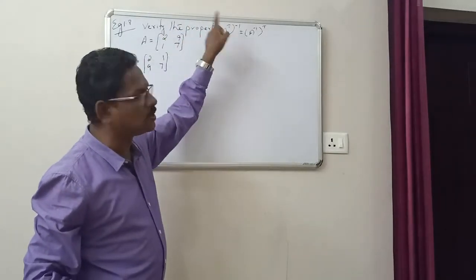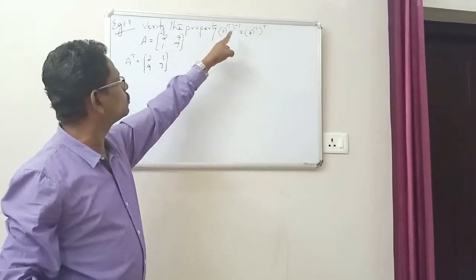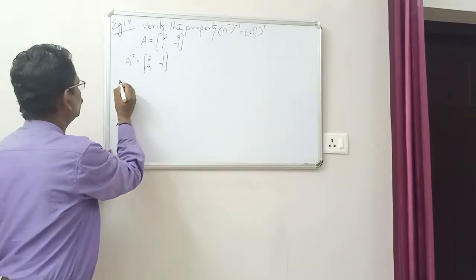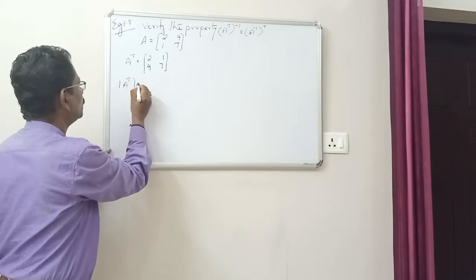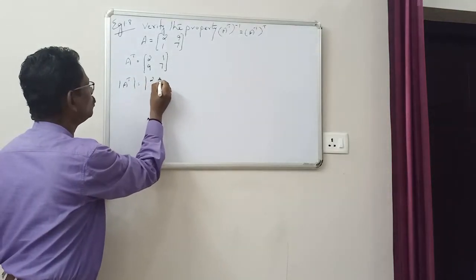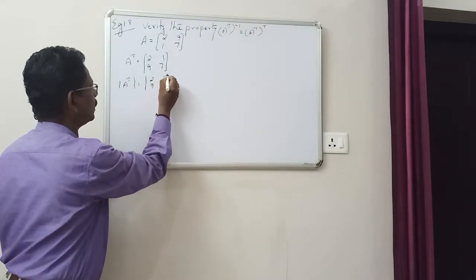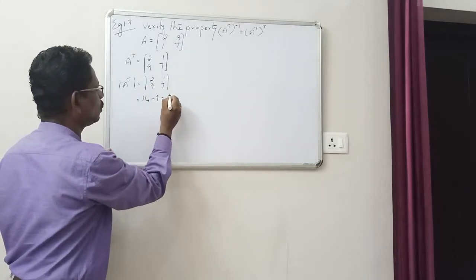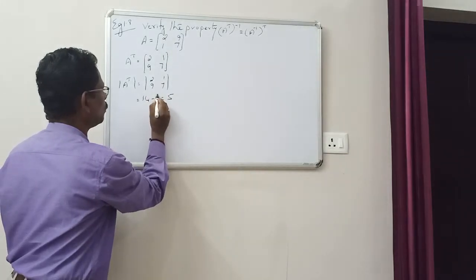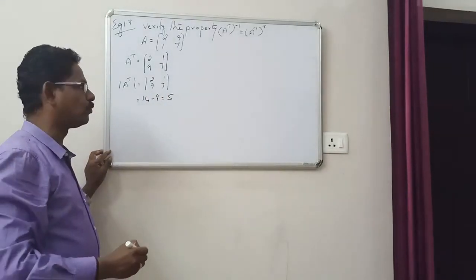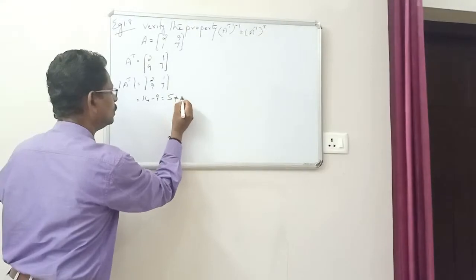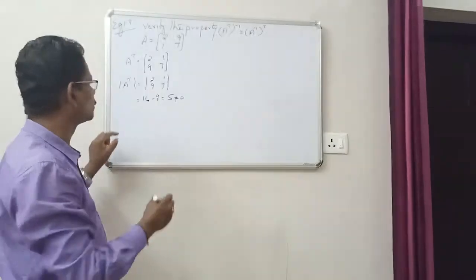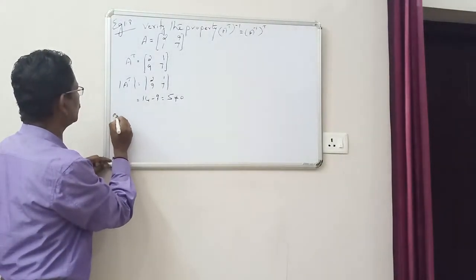Now, A transpose inverse. First, find the determinant of A transpose. Determinant of A transpose equals determinant of [[2, 1], [9, 7]] which equals 14 minus 9, equal to 5. Since it is not equal to 0, the inverse exists.